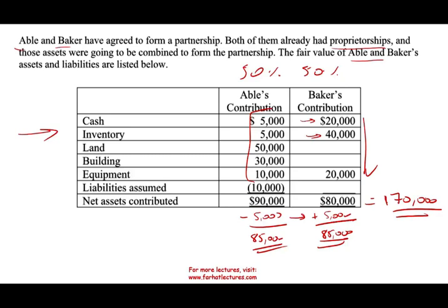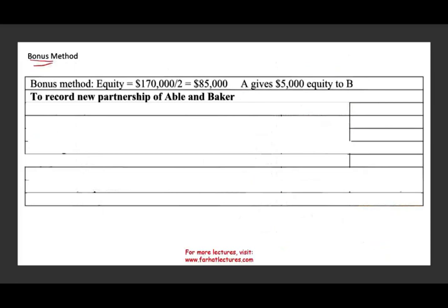170,000 divided by 2 gives us 85,000, so each partner's capital is 85,000. A is giving up 5,000. You might ask why — perhaps B has some special skills that are not quantifiable and cannot be translated into cash or inventory. So Abel said, 'Just join the partnership — I'll give you a bonus of $5,000 for those skills.'